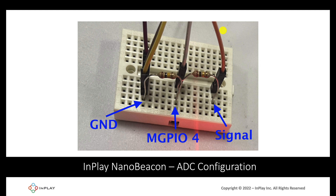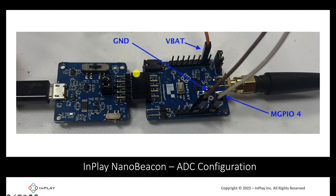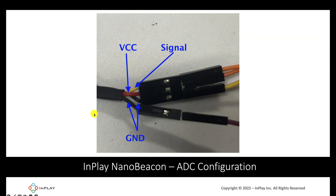Looking more closely at the IN100 connections: we have three cables coming out. VBAT supplies power to the sensor itself, ground goes to the breadboard, and MGPIO4 reads between the two resistors. From the sensor we have the signal going to the voltage divider circuit, VCC going directly to the IN100, and ground connections going to the breadboard, which is connected to ground from the IN100.